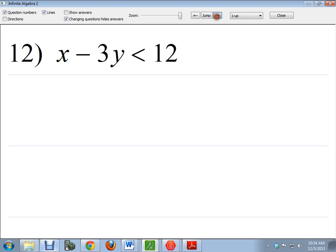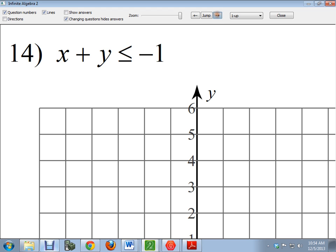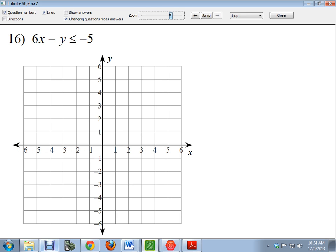So the next section is just asking you to graph these. Now I'm going to do number 16 which I think is the last problem on the page. And this one requires a couple things. I have to solve it. I have to state the direction of shading as well as the type of line. And then graph it.